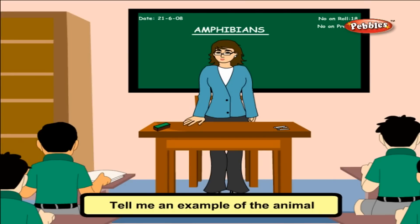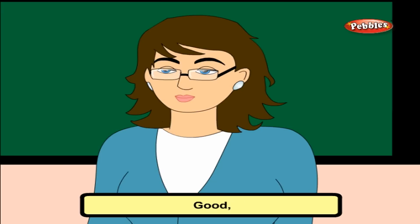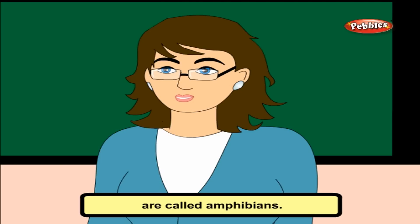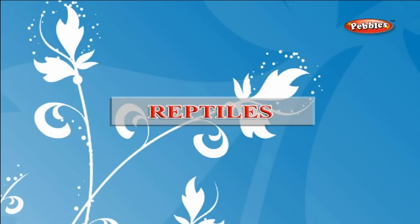Amphibians are animals that live both in water and on land — for example, frog and toad. These animals are called amphibians. They have lungs, they also have legs, and their feet are webbed, which helps them to swim.